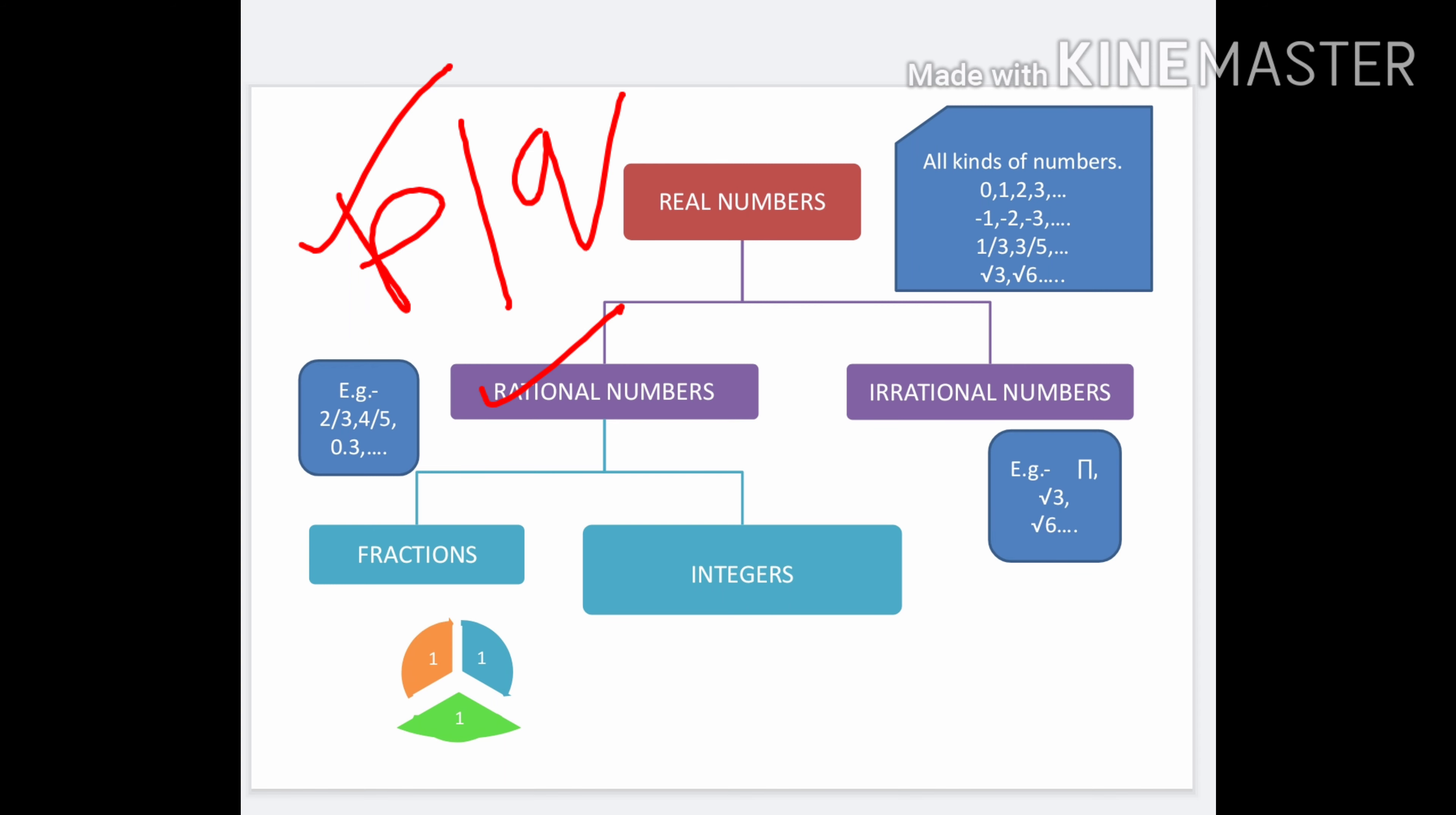Irrational numbers are those which cannot be written in P upon Q form. For example, pi, root 3, and root 6. Pi is considered the most important number in irrational numbers. This is also asked in exam questions.